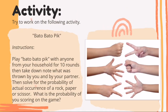Let's try this activity titled 'Bato Bato Peak.' Play bato bato peak with anyone from your household for 10 rounds. Take note of what was thrown by you and your partner, then solve for the probability of actual occurrence of rock, paper, or scissors. You may also answer: what is the probability of you scoring in the game? Give it a try!